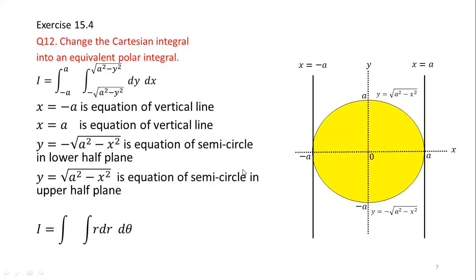After identifying the region of integration, we convert this Cartesian integral into an equivalent polar integral. We replace dy dx with r dr dθ. To calculate the limits of r, we use the arrow technique, passing an arrow from the origin to the outer boundary of the region. Since the center is inside our region, the distance of the center from itself is 0, so the lower limit of r is 0. The upper limit of r comes from the boundary of the circle: the distance of each point on the boundary from the origin equals a. So limits of r are 0 to a.